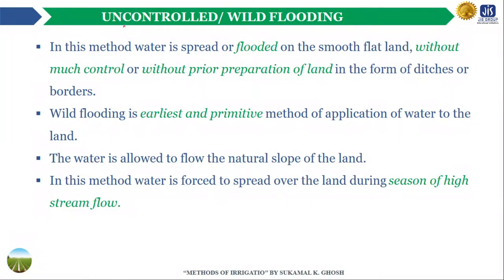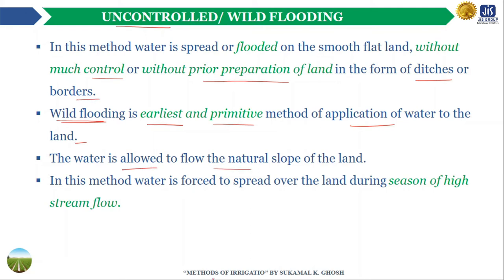Uncontrolled flooding, also known as wild flooding, is the earliest and most primitive method of application of water to the land. In this method, water is applied by spreading it over the land without any prior preparation or control in the form of ditches, levees, or borders to guide the flow. During seasons of high stream flow, water is brought from a natural stream or river to the field in permanent supply channels and allowed to spread along the natural slope of the land without any control.